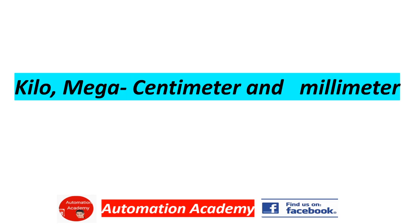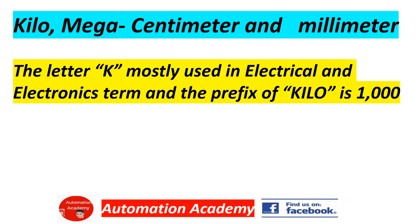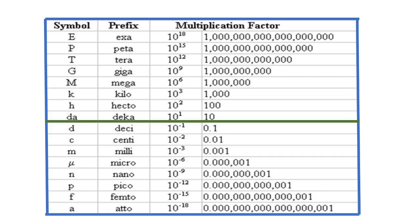Our next topic covers Kilo, Mega, Centimeter, and Millimeter. The letter K is mostly used in electrical and electronics terms, and the prefix Kilo represents 1000. We have here a table of symbols, prefixes, and multiplication factors.